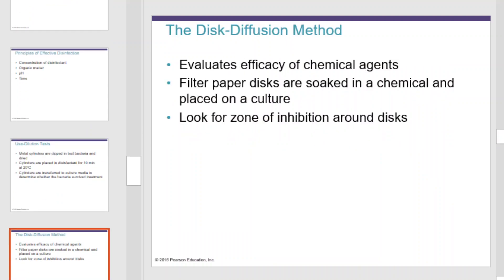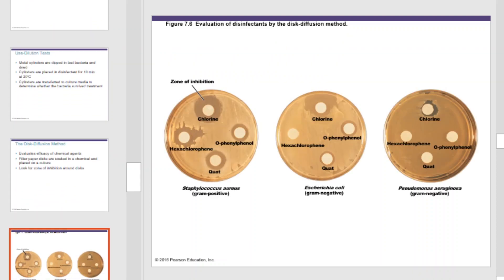In the disc diffusion method, we evaluate the efficacy of chemical agents by applying the chemical agent to a paper disc and placing that disc in our inoculum, then looking for a zone of inhibition. The larger the zone of inhibition, the more effective the disinfectant.